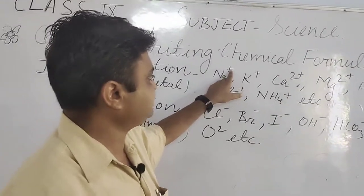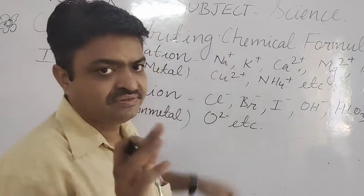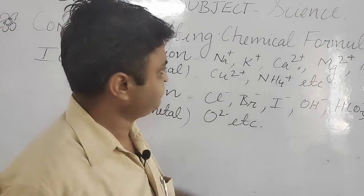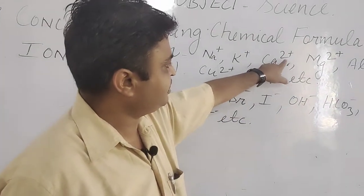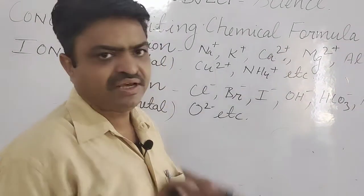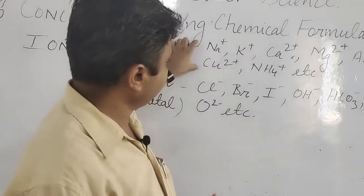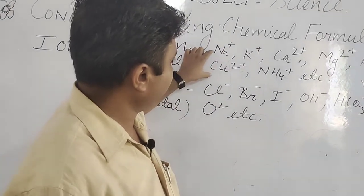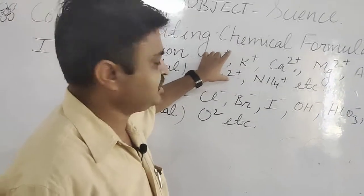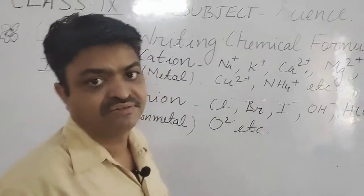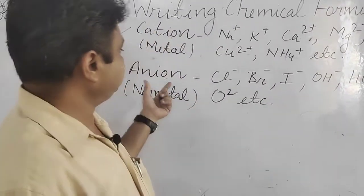If there is only a plus sign, it means they have a charge of one. If the number two is written, it means they have a charge of two. So first you should learn the symbol, and after that you should also learn the charge that is on them.